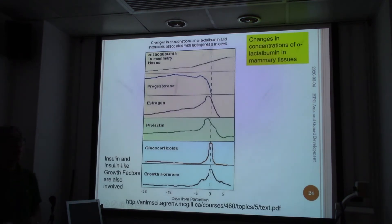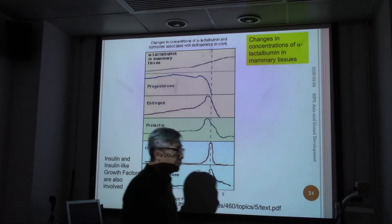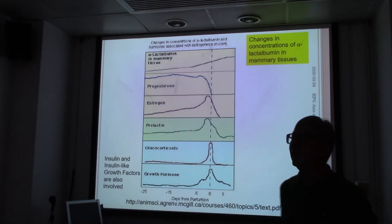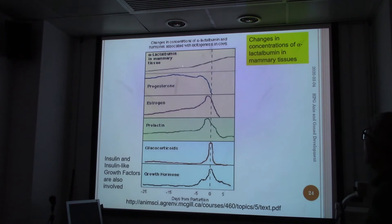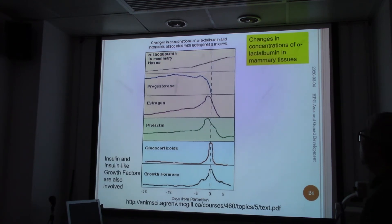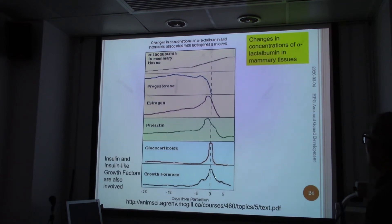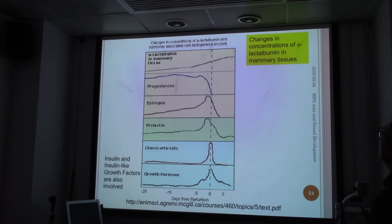When the baby is born or ready to be born, we need to prepare other things — most importantly, milk. In the mammary gland tissues, we have lactalbumin, so we need to produce a lot of protein. Progesterone would be down and estrogen should be up. We also have prolactin, glucocorticoids, and growth hormone. From growth hormone, we also have IGFs involved in baby development and milk production.